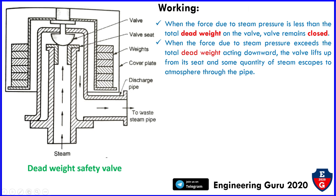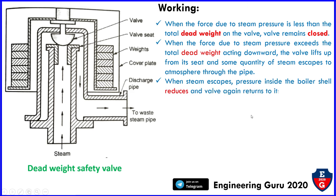When the valve is open, steam enters and goes through the waste steam pipe in this way. When the steam escapes, the pressure inside the boiler shell reduces and the valve returns to its original position due to gravity — meaning the valve will close when the pressure inside the boiler shell is reduced.